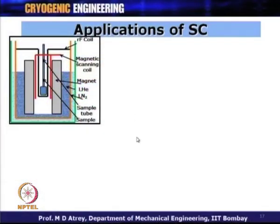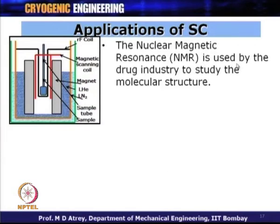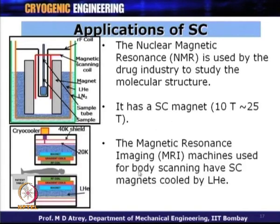Similar applications of superconductivity include NMR (Nuclear Magnetic Resonance) apparatus, where a superconducting magnet is kept dipped in liquid helium surrounded by liquid nitrogen. This produces a superconducting magnet at low temperature for nuclear magnetic resonance, allowing NMR analysis of samples placed at the center. Similarly, MRI magnets are kept dipped in liquid helium surrounded by liquid nitrogen or cryocooler-cooled shields, enabling body scanning. All windings in these cases are made of niobium-titanium or niobium-tin depending on the required magnetic field strength.